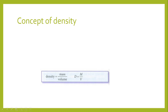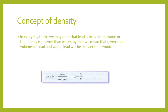The symbol D is used for density here, but in further chapters we will use the symbol rho (ρ) to denote density. In everyday terms, we say that lead is heavier than wood, or that honey is heavier than water. By that we mean that given equal volumes of lead and wood, lead will be heavier. We have this common sense that lead is heavier than wood, steel is heavier than plastic, and iron is heavier than wood.